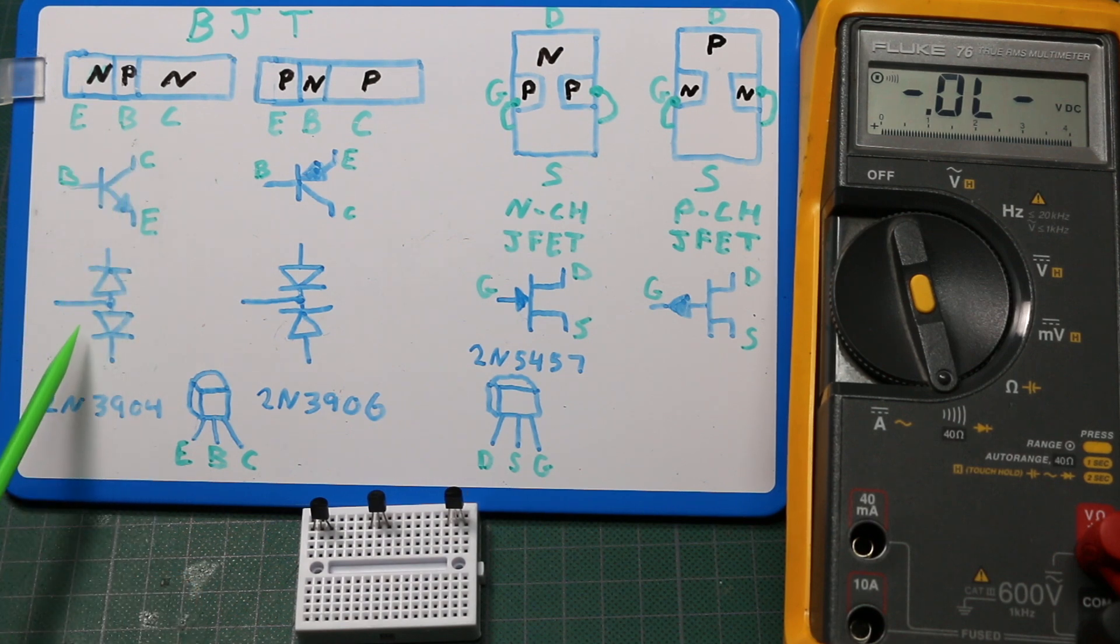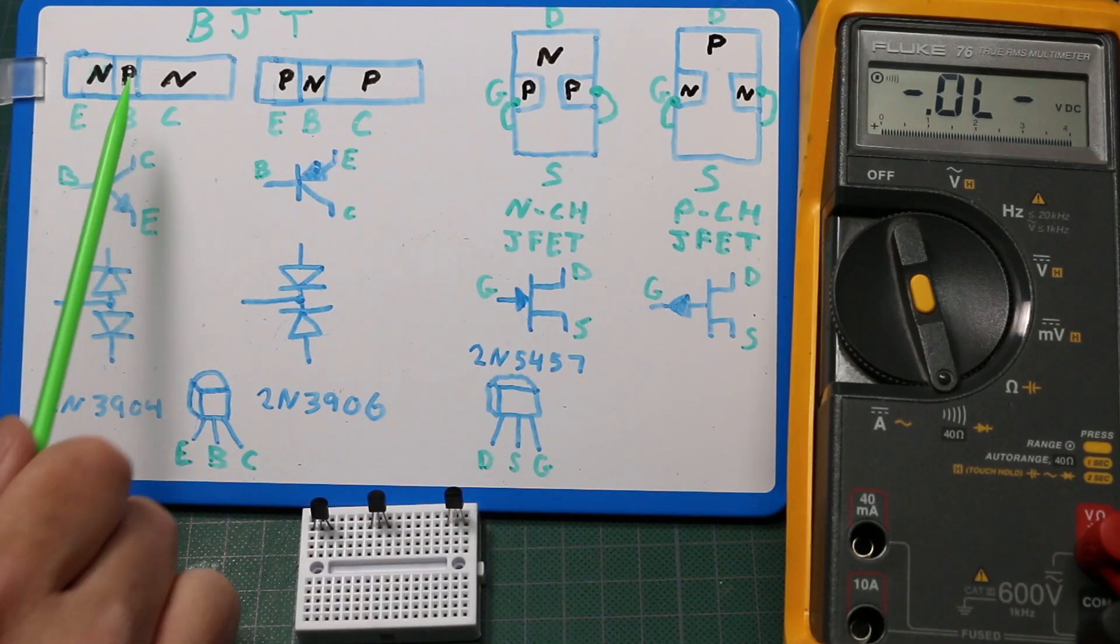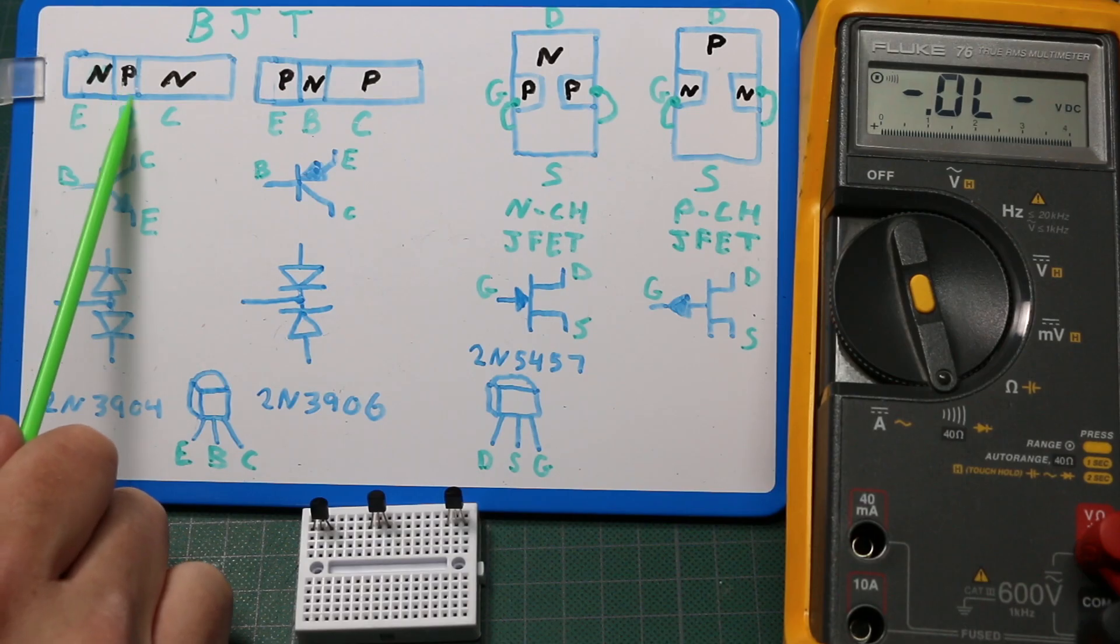So this can actually be represented by two diodes. We have a PN junction from base to emitter and another one from base to collector where the base is a common terminal.